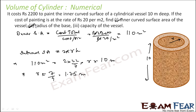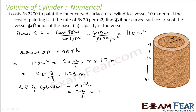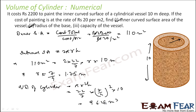Once we have the radius, the third part is finding the capacity of the vessel, which equals the volume of the cylinder: π r² h = 22/7 × (7/4)² × 10 = 96.25 meter cube. Since 1 meter cube equals 1 kiloliter, the capacity is also 96.25 kiloliter.